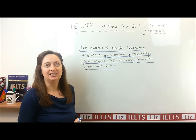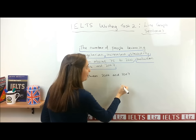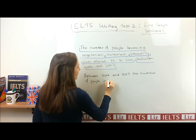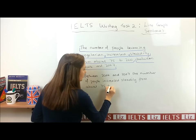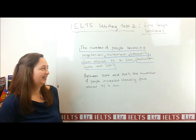One way we could change it is we could start with the dates. So: between 2004 and 2007, the number of people becoming vegetarian increased steadily from about 75 to 200. Often when we put the date first, we have a comma after that, and then we have the number of people. So that's one way to change it.